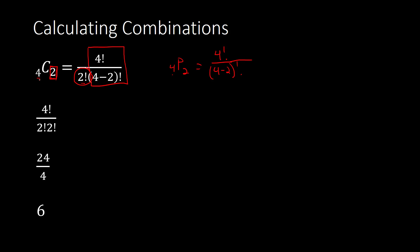Either way, we can list them all out, go through the process like with permutations, or go through the process here with factorial. Make sure you can think through all three of those different methods, though obviously listing out the groups will not be the best method of solving. In general, nCr equals n factorial divided by r factorial times n minus r factorial.